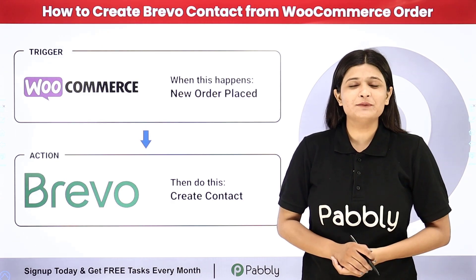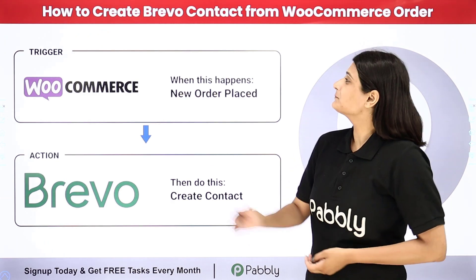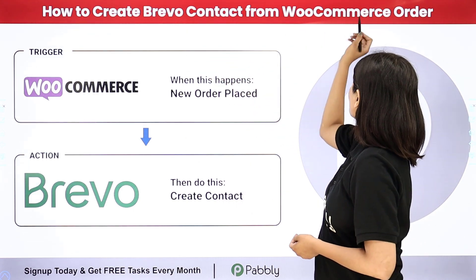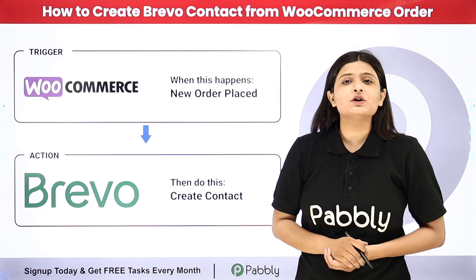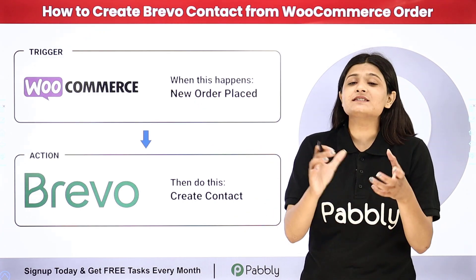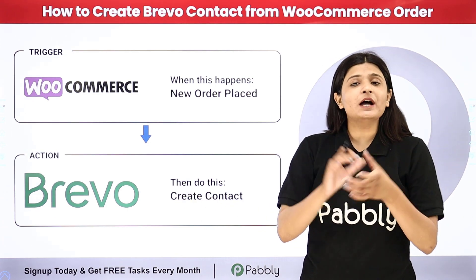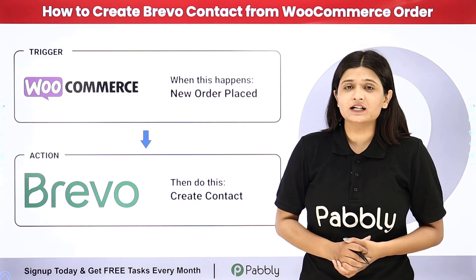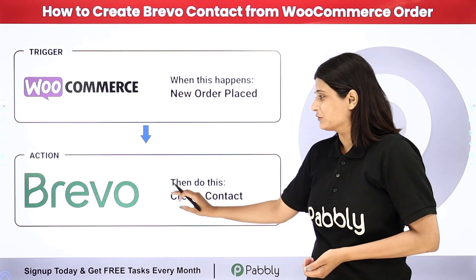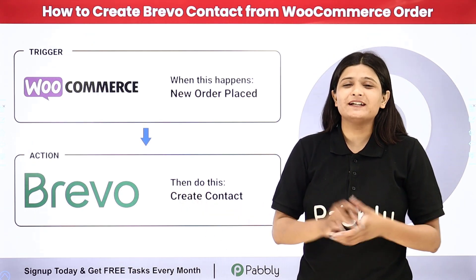Hello everyone, welcome back to Pabbly. In this video we are going to learn how to create a Brevo contact from a WooCommerce order. So let's suppose I have a store on WooCommerce and whenever a customer makes a purchase, I am creating a contact in Brevo. Now I want that whenever a customer makes a purchase, a contact should be automatically created in Brevo. I can do this automation with the help of Pabbly Connect.